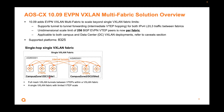Or if it's different data centers or different sites, they all need to have full mesh. That's the limit — you can't scale beyond the data sheet limit of 256 BGP EVPN peers. So that's the control plane limit.